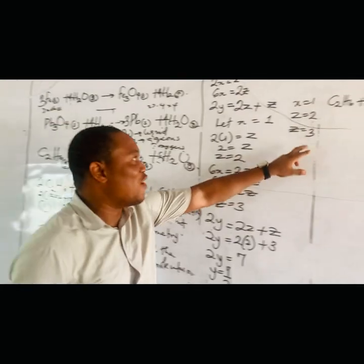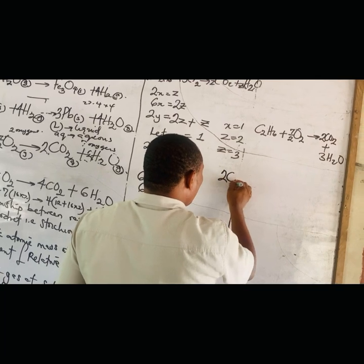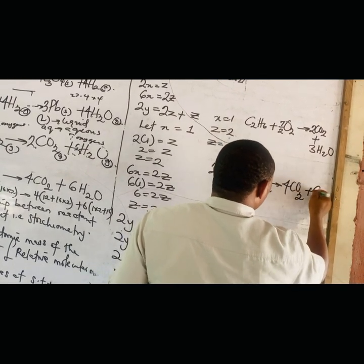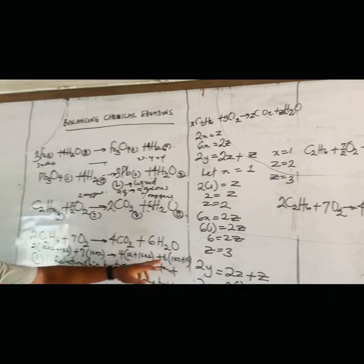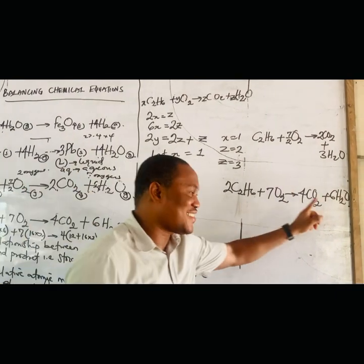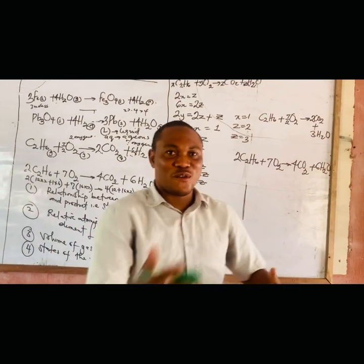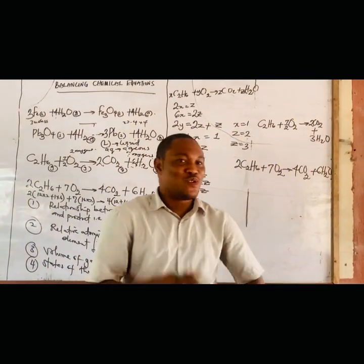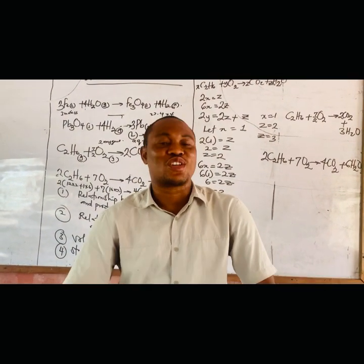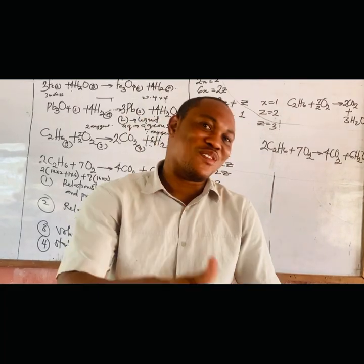Let's verify: carbon — 2 × 2 = 4 on the left, 4 on the right ✓; hydrogen — 2 × 6 = 12, and 6 × 2 = 12 ✓; oxygen — 7 × 2 = 14, and 4 × 2 + 6 = 14 ✓. Balanced! That is how we use simultaneous equations to balance chemical equations. I hope this video helps, especially beginners. For advanced students — college of education or university — you can apply this method to get coefficients quickly. If you're watching this channel for the first time, please subscribe, like, comment, and share. I'll be meeting you in the next episode. Chemistry is for everyone — I love you!